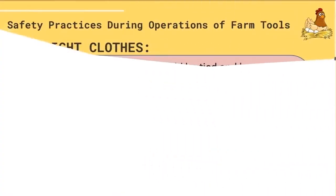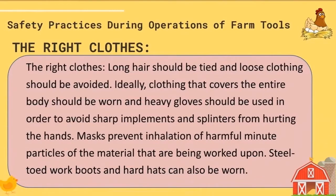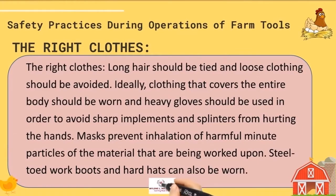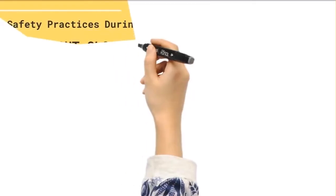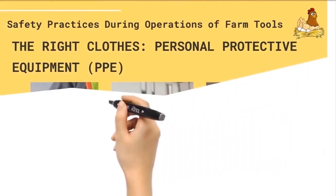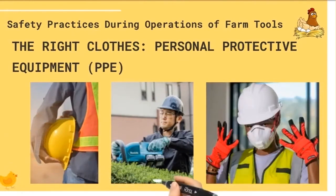The right clothes. Long hair should be tied and loose clothing should be avoided. Ideally, clothing that covers the entire body should be worn, and heavy gloves should be used to avoid sharp implements and splinters from hurting the hands. Masks prevent inhalation of harmful minute particles. Steel-toed work boots and hard hats can also be worn. These are examples of right clothes while working, also called PPE or personal protective equipment.